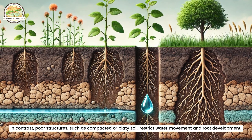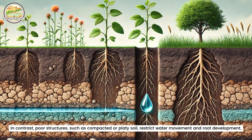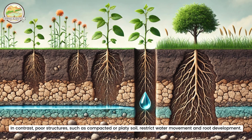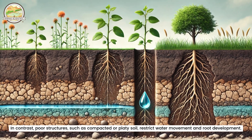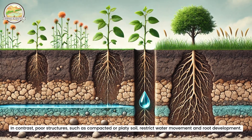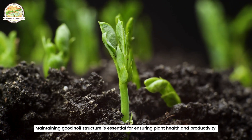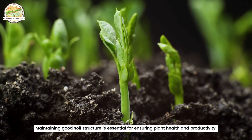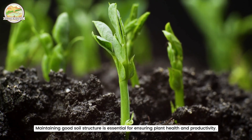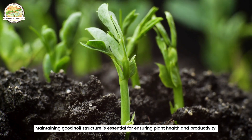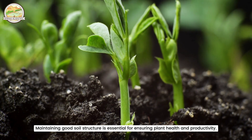In contrast, poor structures, such as compacted or platy soil, restrict water movement and root development. Maintaining good soil structure is essential for ensuring plant health and productivity.